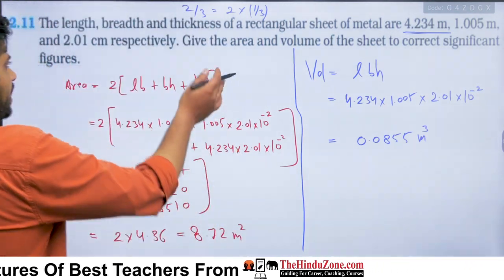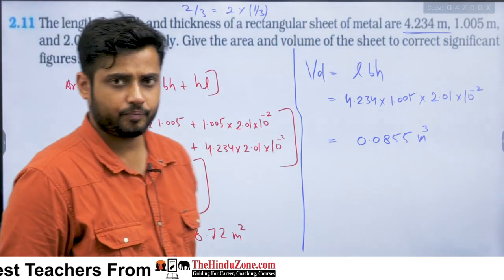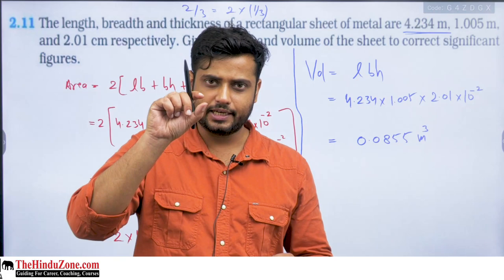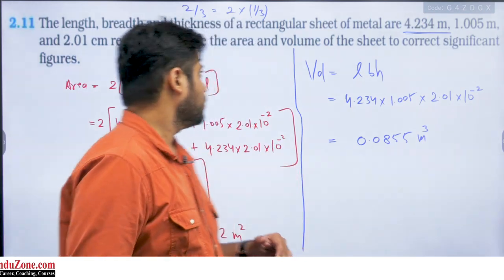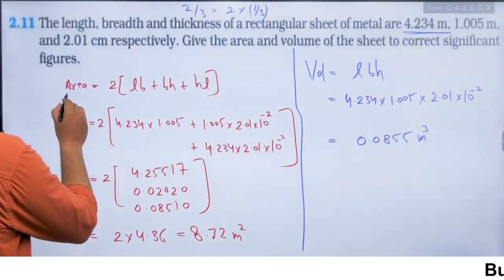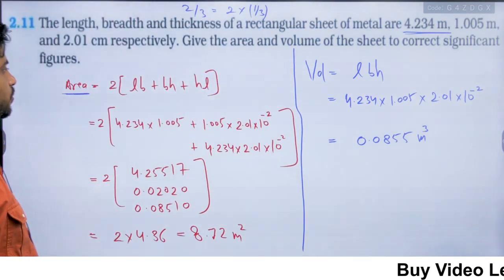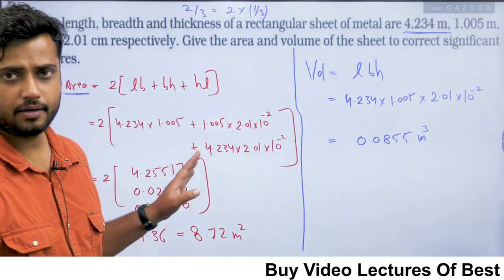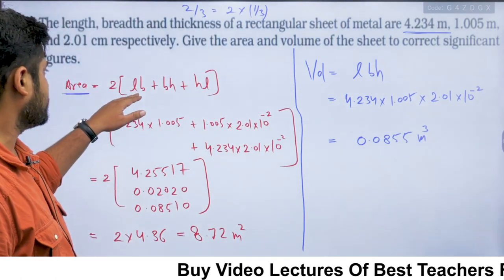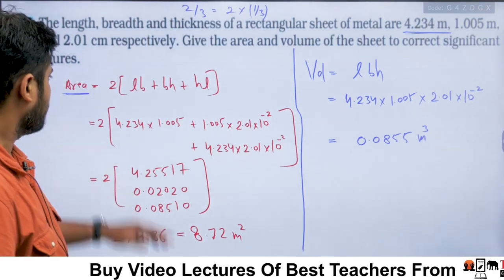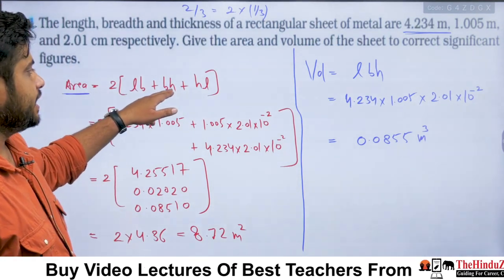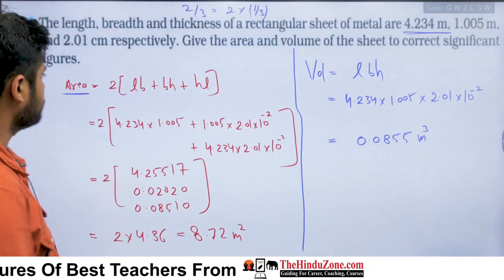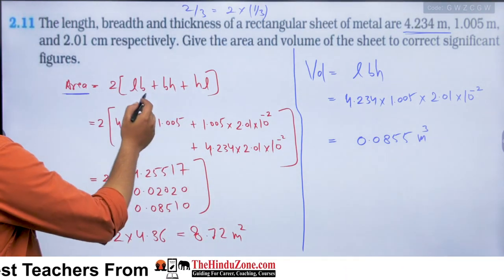Now let's talk about area. This is a cuboid with some thickness and surfaces. The total surface area will be 2(LB + BH + HL). There are two faces of LB, LB, BH, and HL — the total of any cuboid is 6 faces.